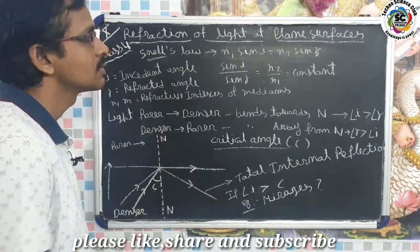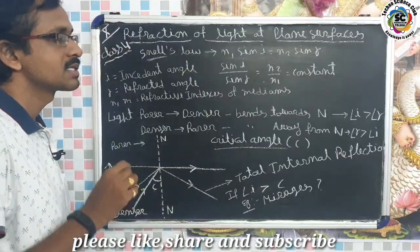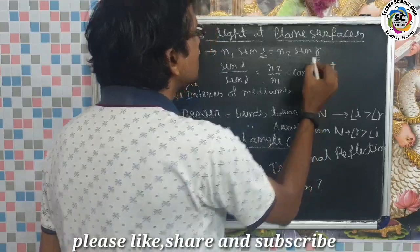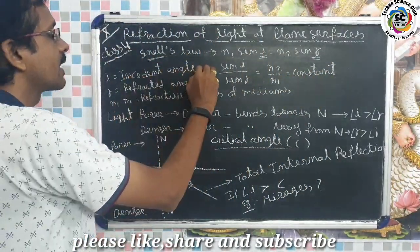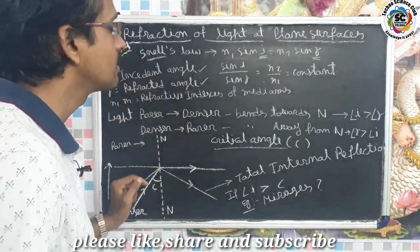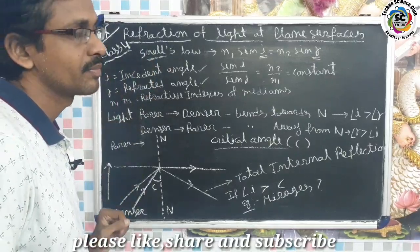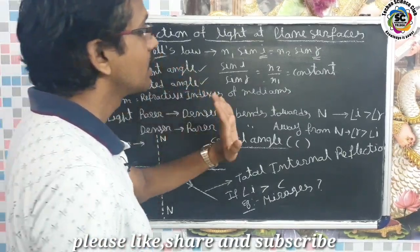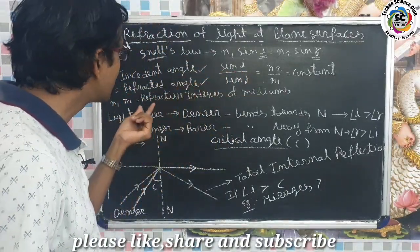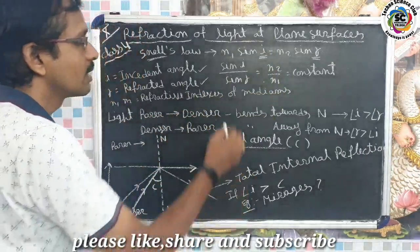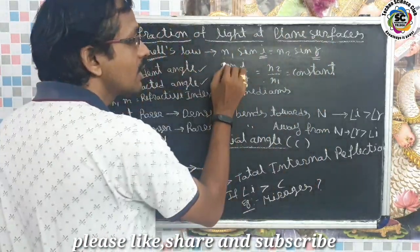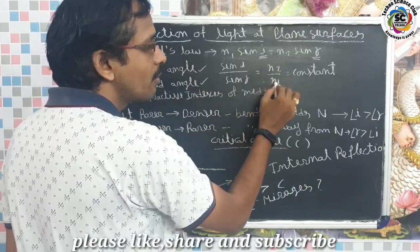What is Snell's law? Snell's law is the relation between i and r — where i is the incident angle and r is the refracted angle. The relation between the incident angle and the refracted angle, along with the refractive indexes of the mediums, gives us Snell's law. The formula is: n1 · sin(i) = n2 · sin(r), or equivalently, sin(i) / sin(r) = n2 / n1.